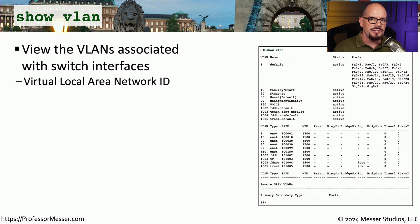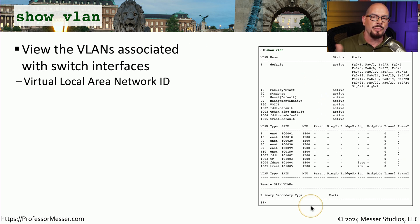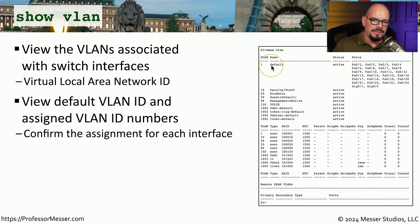If you're working a lot with switches, then you're probably doing a lot of VLAN configurations as well. So it's important to be able to view what VLANs are associated with which interfaces on that switch. You would view this by using the show VLAN command. This will list out all of the VLANs on this device and show you what interfaces have been assigned to each VLAN. Not only can we view the assigned VLAN IDs, you can also see what the default VLAN is for the entire switch, as well as any interfaces specifically assigned to a different VLAN.